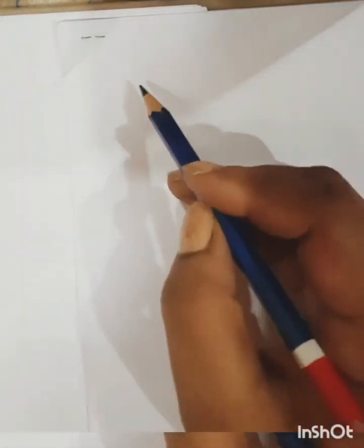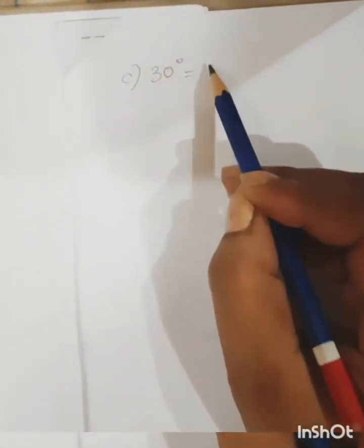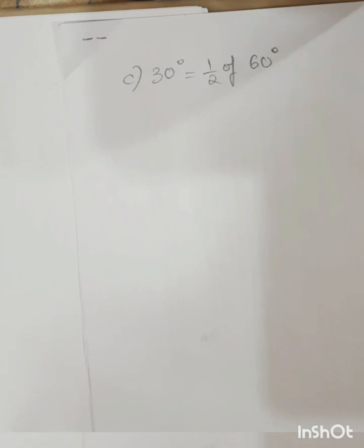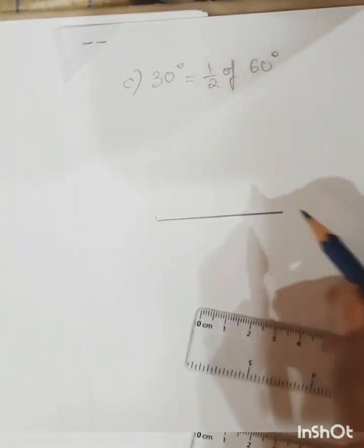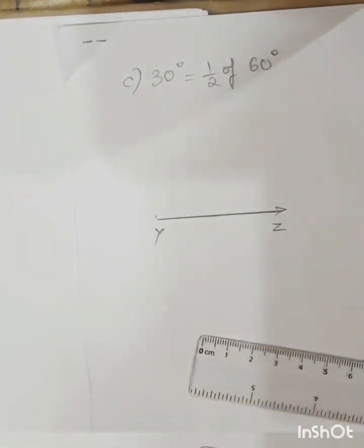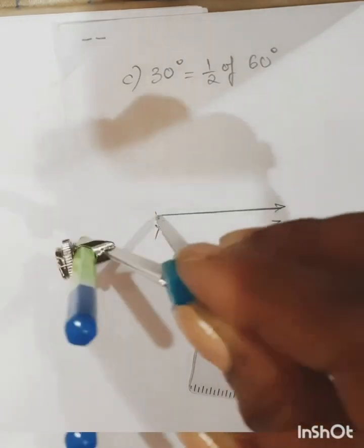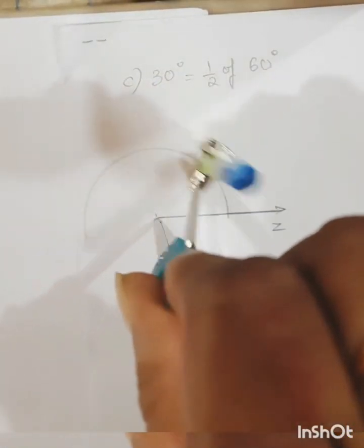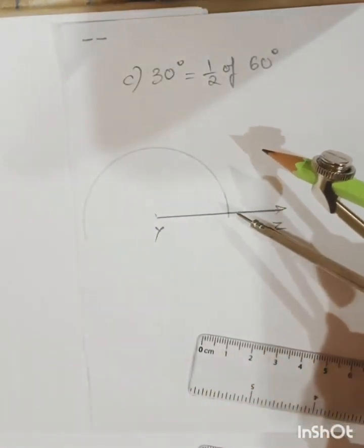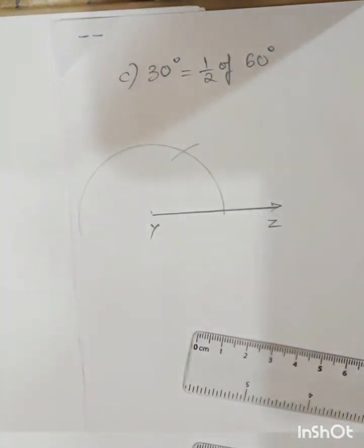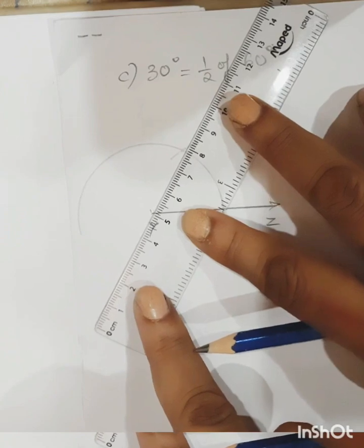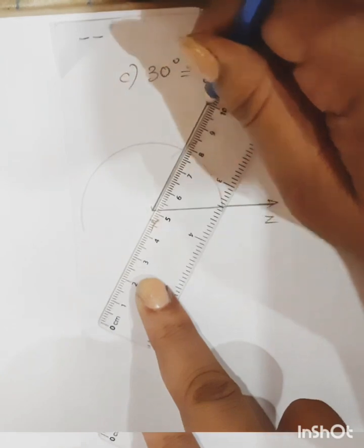Now let's do 30 degrees. 30 degrees means half of 60 degrees, so first we need to draw 60 degrees then bisect it. Bisect means we will divide 60 degrees into two equal halves. Keep the compass at point Y, draw a semicircle without disturbing the distance between the pen and the pencil, then draw a small arc on that semicircle — this is your 60 degrees. Join these two points carefully — otherwise it may become 61 or 59 degrees, so be careful.